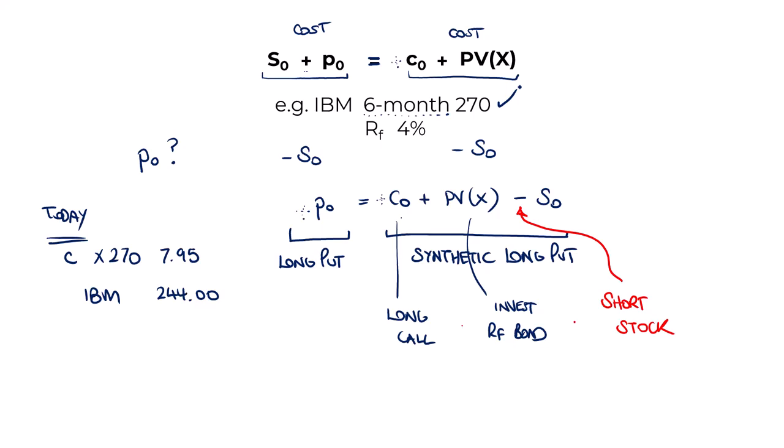So with that information, we can calculate the value of a long put, can't we? The long call, it's going to cost us $7.95. The PV of the strike is the 270 discounted at the risk-free rate. We're saying it's 4%. We're assuming it's exactly 12 months. So to the power of 6 over 12. Short the stock. So minus, that would cost us. That's a cost we have to invest. We'd sell the stock. So we'd knock off the proceeds from sale today, 244. That would give us $28.71. So in theory, if we've got the right risk-free rate, and that applies for those six months, and there's exactly six months to expiry, if your call is priced at $7.95, your put should be $28.71 on the same stock with the same strike and the same expiry date.